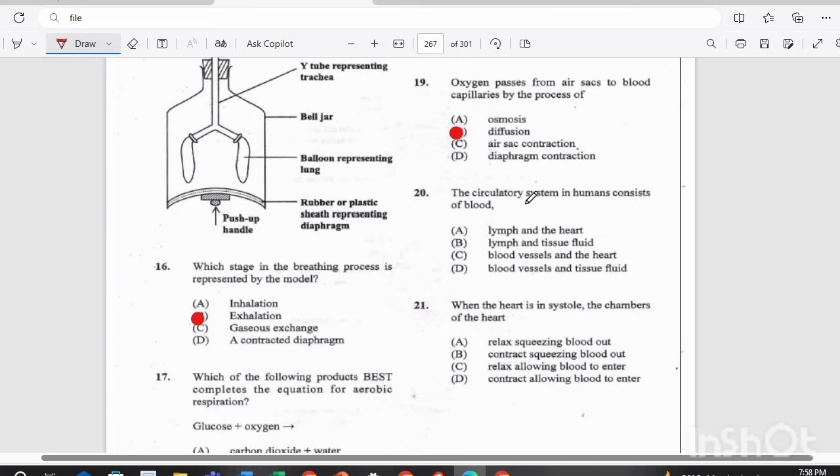Question 20. The circulatory system in humans consists of blood, lymph and the heart, lymph and tissue fluid, blood vessels and the heart, or blood vessels and tissue fluid. If you answered C, blood vessels and the heart, you are correct.